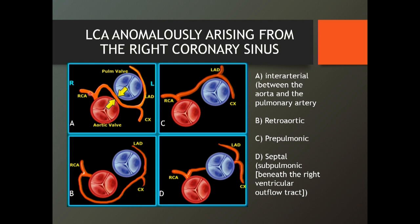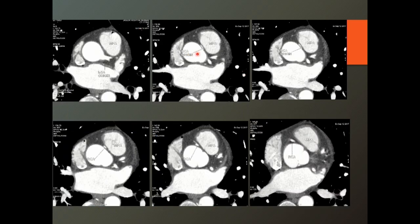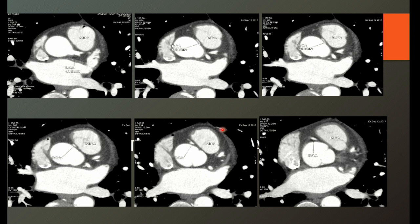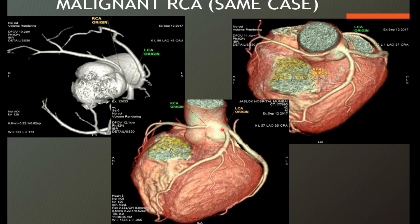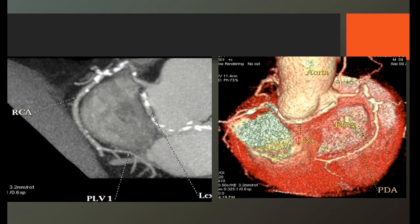This is how it looks — it's very easy. You can see the RCA coursing between the aortic valve and pulmonary valve — bad, this is a malignant variety. Here it goes behind the aorta — retro-aortic. Here it goes in front of the pulmonary artery — pre-pulmonic. And here it goes below the pulmonary artery — sub-pulmonic. So those are the four types. This RCA is arising and coursing through between the aorta and the pulmonary artery — physically going through between them. It's a malignant RCA because it's an inter-arterial course. It can get compressed due to pulsations.